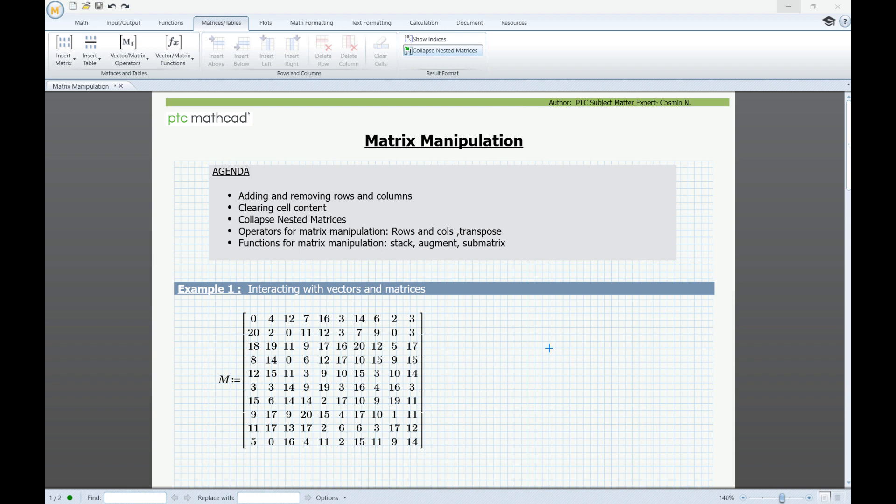Let's start with the matrix of random numbers called M. If we want to add blank rows and columns to this matrix, we need to place the cursor inside the matrix, and from the matrix and tables tab,